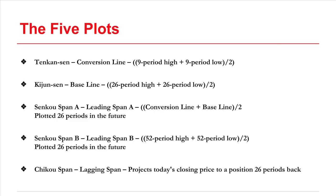The next two plots make up the actual cloud shape in the graph. The Senku Span A, or the leading span A, averages the first two plots — the conversion line and the baseline — and on the chart that's plotted 26 periods in the future. The Senku Span B, also plotted 26 periods in the future, takes the average of the 52-period high and the 52-period low.